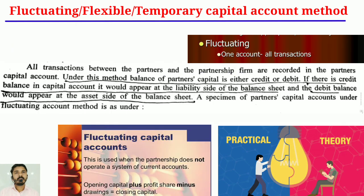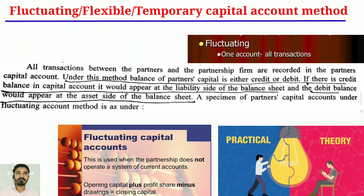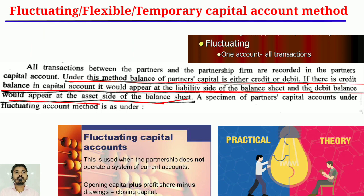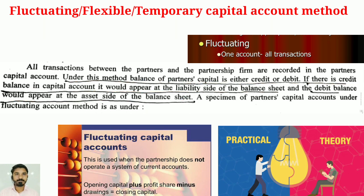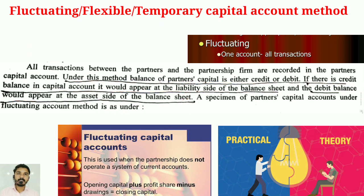All transactions between the partners and the partnership firm are recorded in the partner's capital account. Under this method, the balance of the partner's capital is either credit or debit. If there is a credit balance in the capital account, it would appear at the liability side of the balance sheet, and the debit balance would appear at the asset side of the balance sheet.